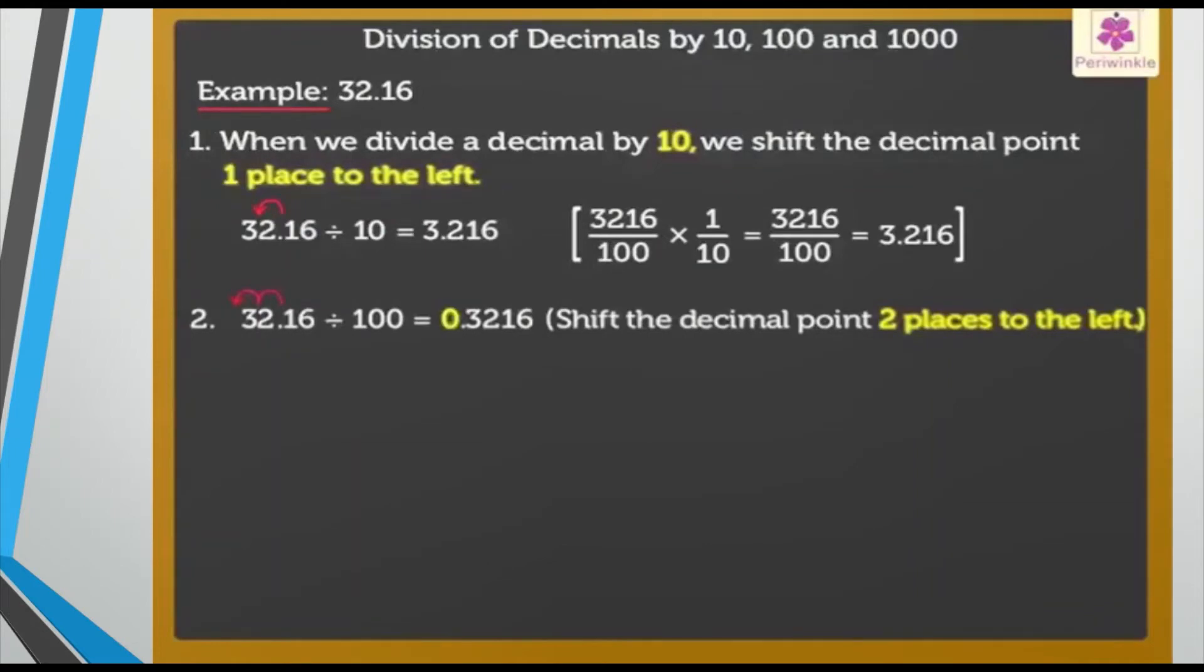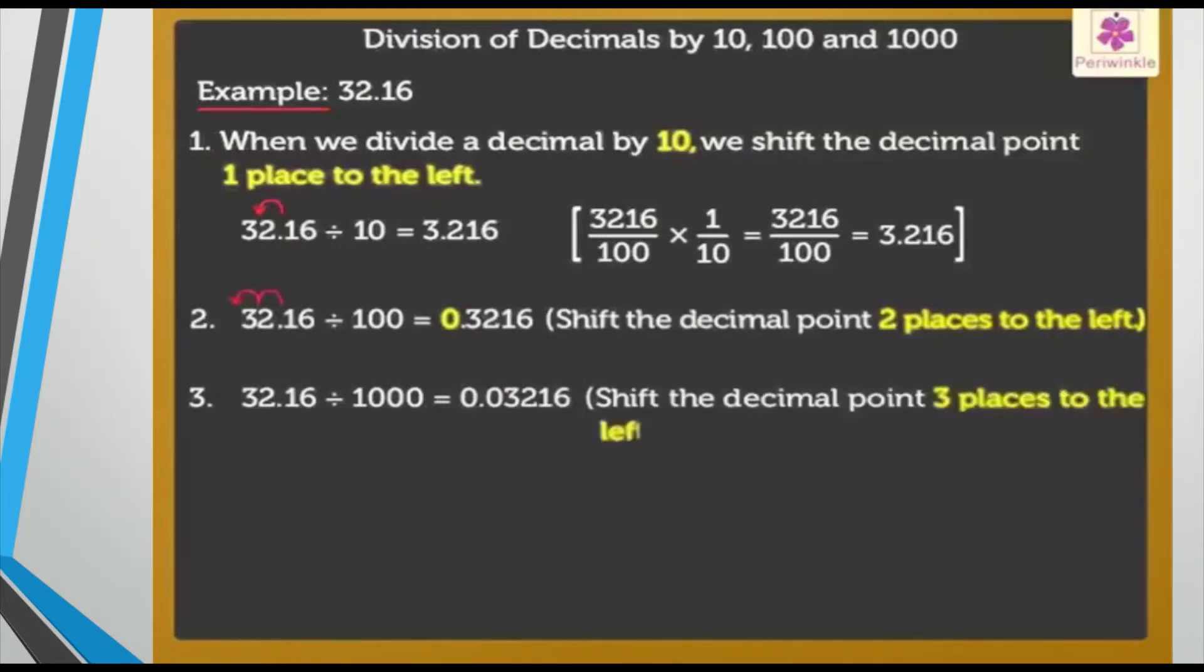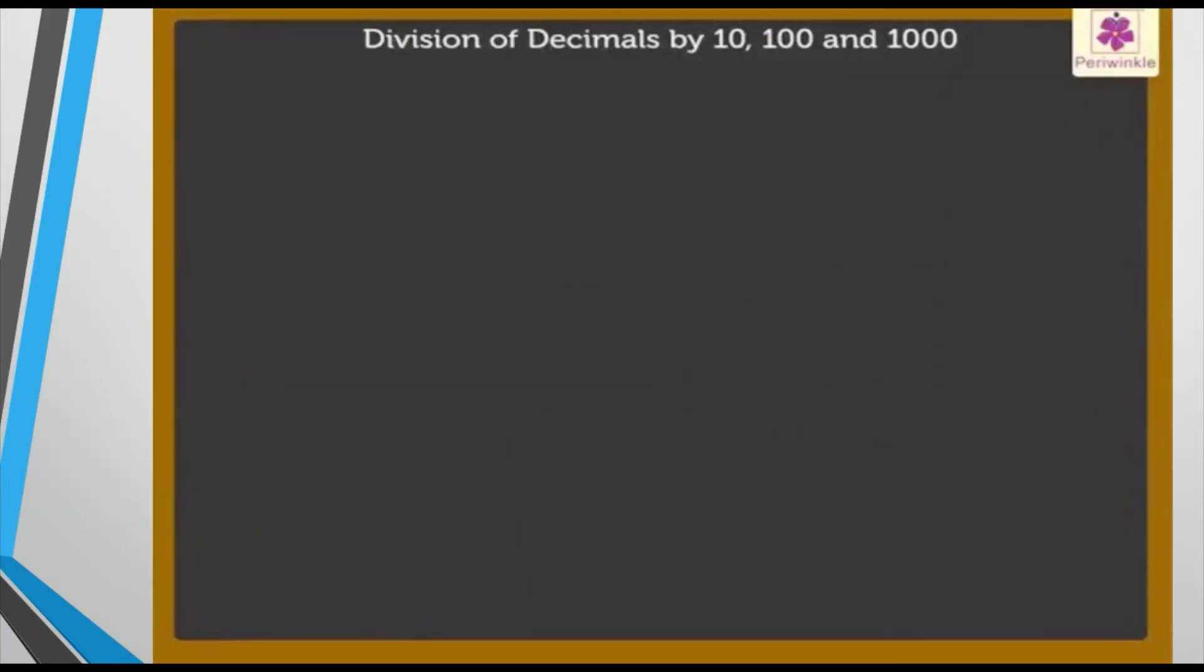If you have to divide by ten, that's one zero, shift one place. If you have hundred, shift two. And if you have thousand, you have to shift three places to the left. So now the answer will be 0.032, because I am shifting the decimal to my left.